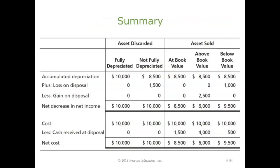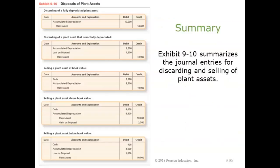As a summary: if an asset is sold at book value, there's no gain or loss. If cash received is above the book value, we'll have a gain. And if cash received is below the book value, we will have a loss on the sale of that asset. The journal entries we've covered summarize all the scenarios.